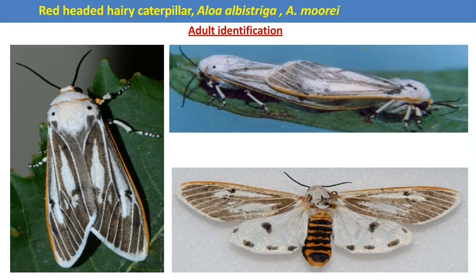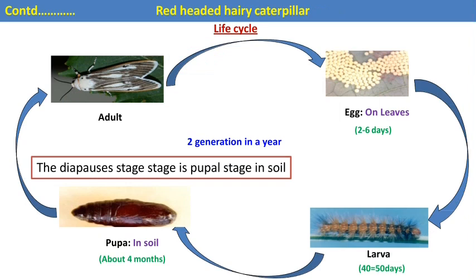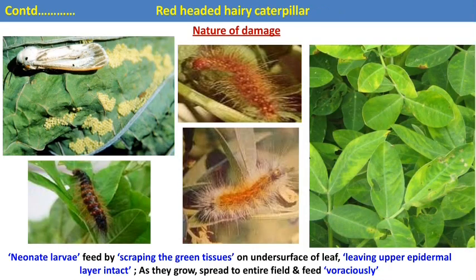The next defoliator pest is the red-headed hairy caterpillar. Amsacta moorei or Amsacta albistriga are two species that infest the groundnut crop. After mating, the female hairy caterpillar moth lays eggs on the leaf surface in clusters. The caterpillar is called hairy because the entire body is covered with numerous hairs. The larva undergoes pupation in the soil. The diapause stage of the red hairy caterpillar is the pupal stage, which occurs in the soil.